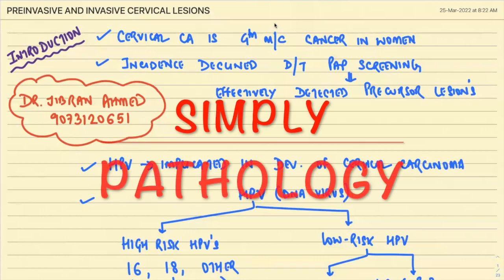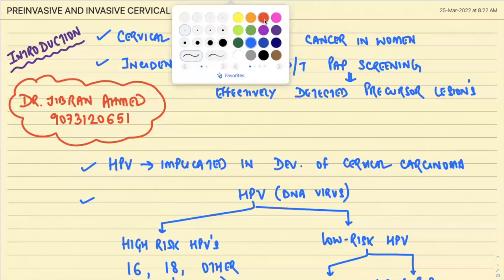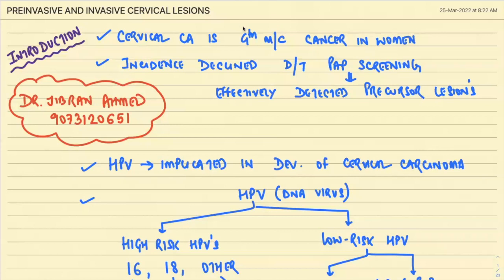Today we are going to start with a very important topic: pre-invasive lesions of the cervix along with cervical carcinoma. Cervical carcinoma is the fourth most common cancer in women, and its incidence has been declining because of PAP screening. PAP screening is a cytological screening of the cervix done to screen for any precursor or invasive lesions.